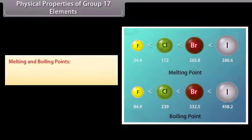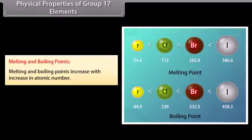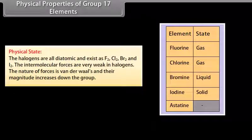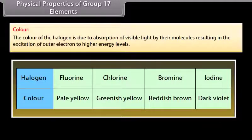Physical properties of group 17 elements: Melting and boiling points increase with increase in atomic number, indicating that the strength of intermolecular forces of attraction increases with atomic number. The halogens are all diatomic, existing as F2, Cl2, Br2 and I2. The intermolecular forces are van der Waals in nature and their magnitude increases down the group. Thus, F2 and Cl2 are gases, bromine is a volatile liquid, and iodine is a volatile solid. The color of halogens is due to absorption of visible light, and the color deepens down the group.